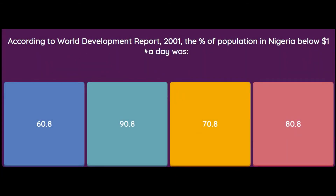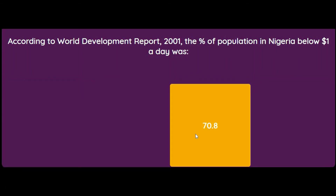According to the World Development Report 2001, the percent of population in Nigeria below $1 a day was? You may not find this in the recent book, but the answer is 70.8. Just remember it is 70.8.